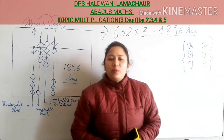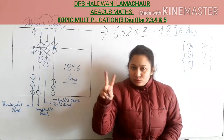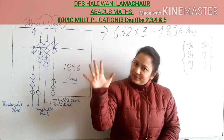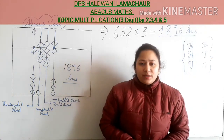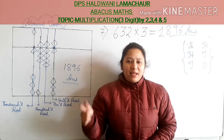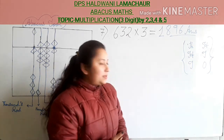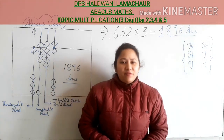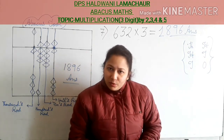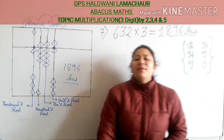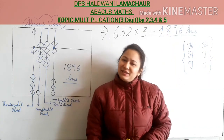I hope kids you get today's topic: multiplication of a 3-digit number by 2, 3, 4 and 5. In my next video we will take multiplication of a 3-digit number by 6, 7, 8 and 9. I hope you liked today's video. With this video I have given you a practice PDF — do that in your Abacus notebook and please use the tool. Make sure to watch every single video and stay tuned to learn more concepts and tricks. Thank you.